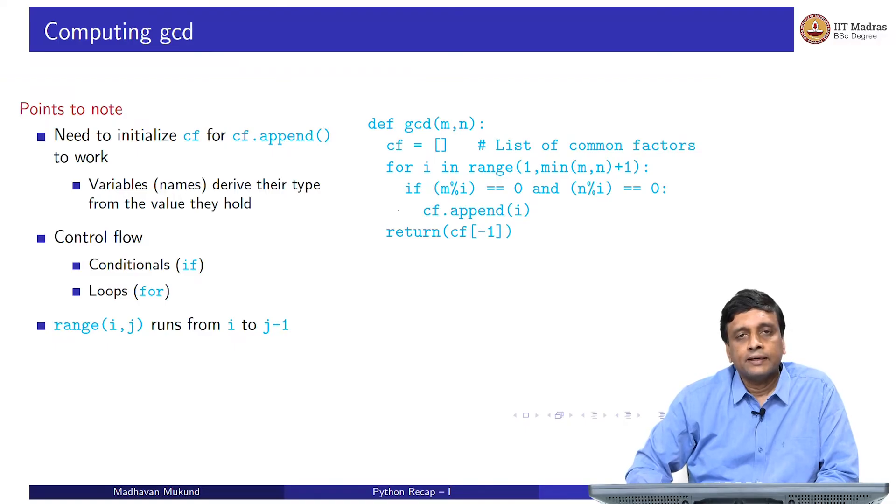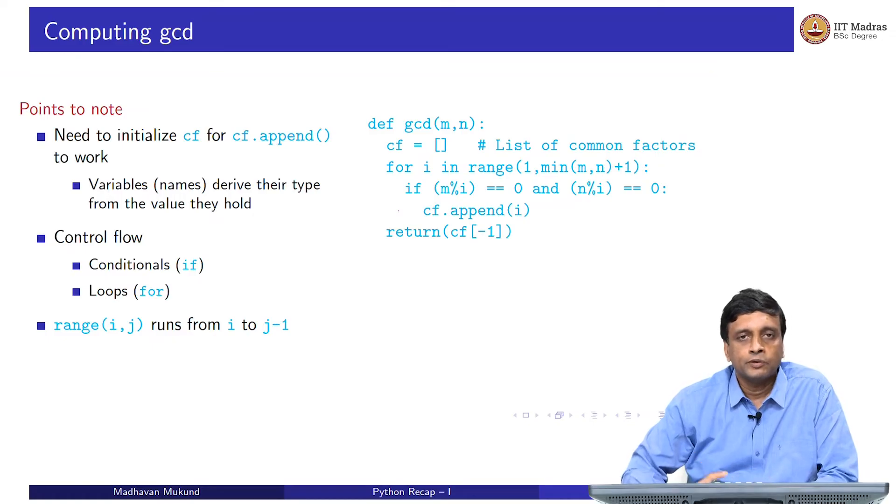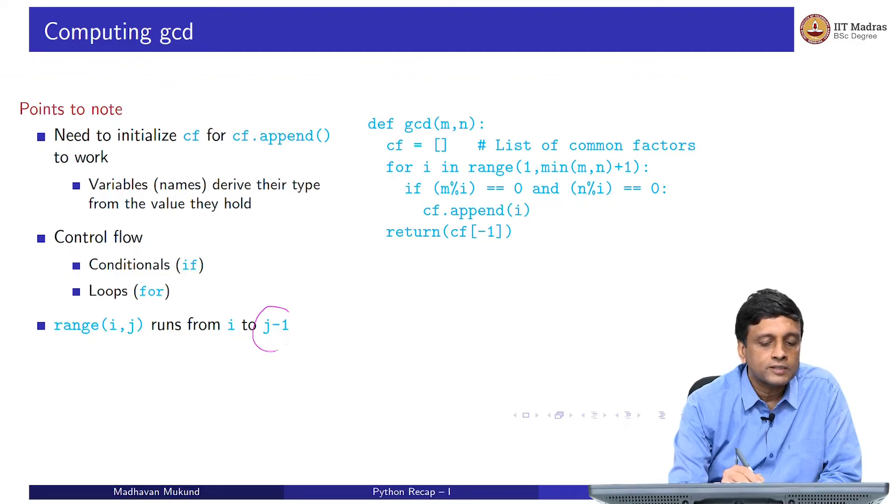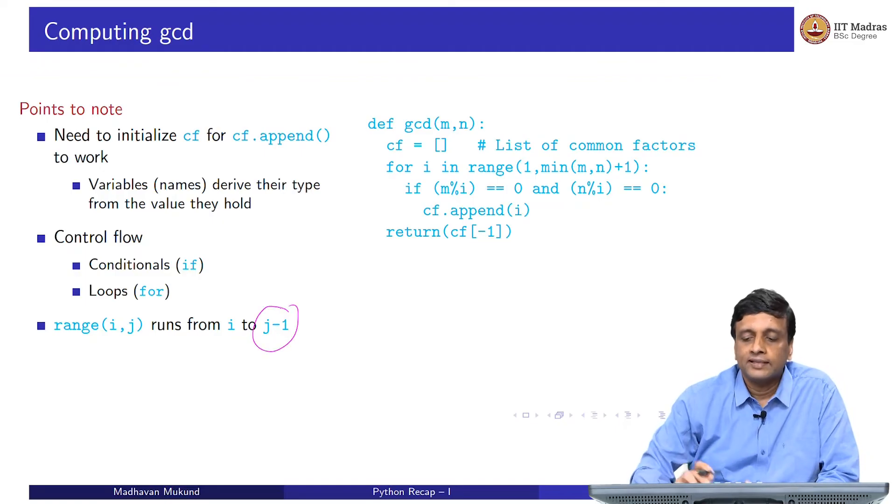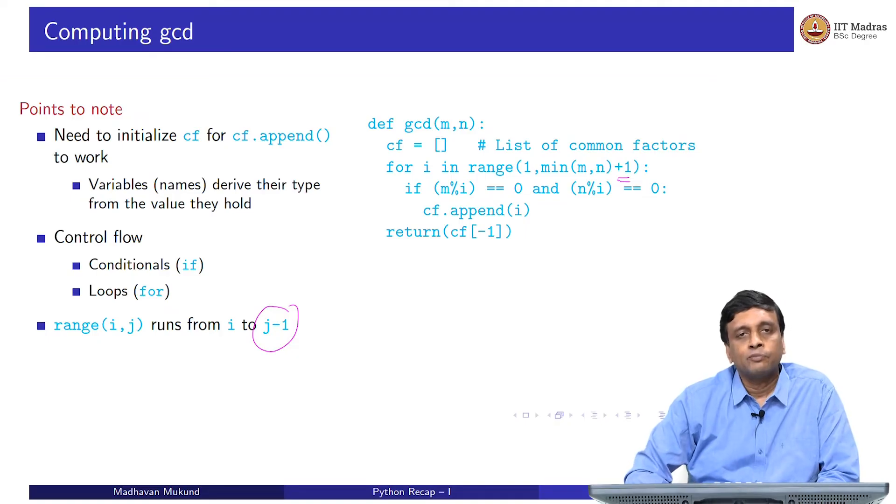The other thing is that Python has this general principle that whenever you take a sequence of numbers, in particular, the range function is something that generates a sequence of numbers from a lower limit to an upper limit. In this case, separated by plus one, you can of course modify it to get a range in which skip elements. But the important thing to remember is it always stops before the last element. That is why we have to, if we want to look for factors from 1 to the minimum of m and n, the range function has to have this extra plus 1. Otherwise, the last factor will not be considered.